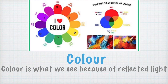Color is what we see because of reflected light, or we can say color is the element of art that refers to reflected light. In our previous video, we have already discussed various types of colors like primary, secondary, complementary, analogous, etc.